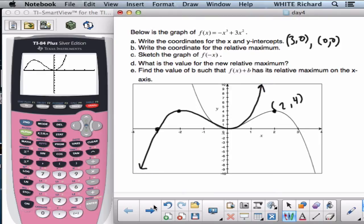Looks pretty good. So there's my f of negative x. What is the value of its new relative maximum? So that that's negative 2, 4. And now for the last part.